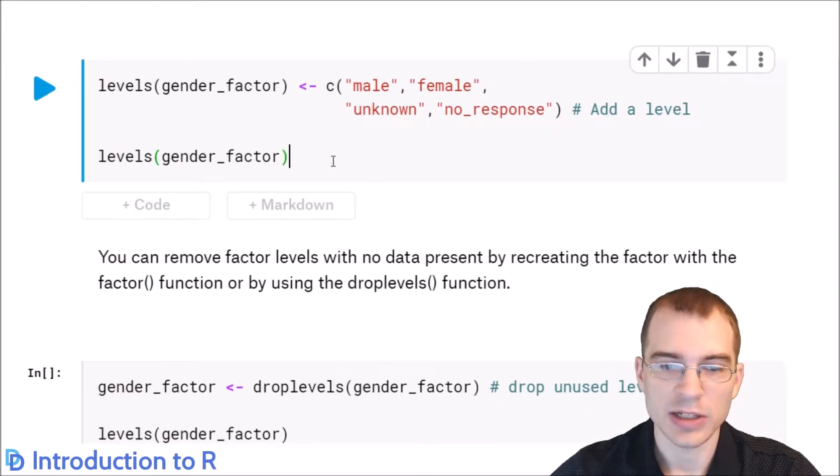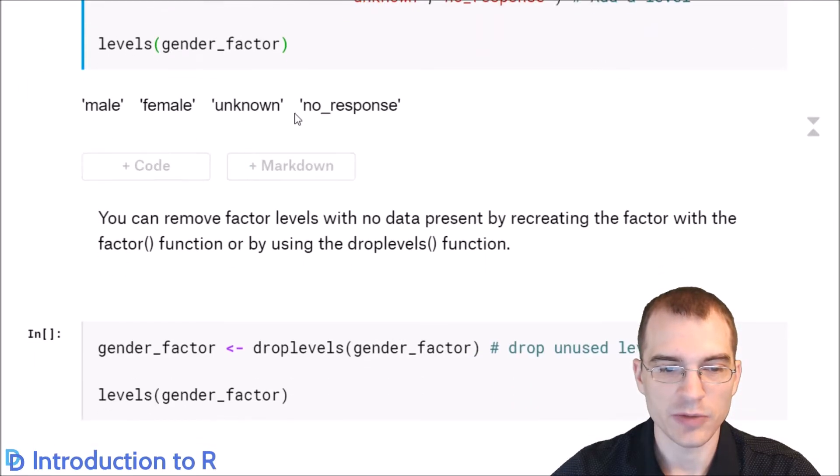And again, after a vector has been created, you can also add new levels using the same construction. So here we're assigning new levels, the same ones we did before, male, female, and unknown, and then another level called noResponse. After we run that, the noResponse level has been added.